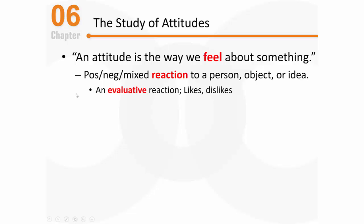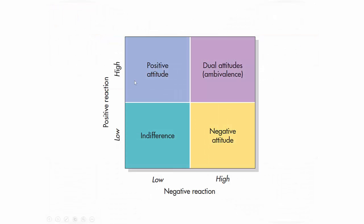Let's focus on the fact that attitudes can be comprised of positive reactions, negative reactions, or even a mix between positive and negative reactions — in other words, attitudes can get relatively complicated. You can have positive reactions and negative reactions about any given attitudinal object. The attitudinal object is the thing you're actually evaluating. For a positive attitude, you have a high positive reaction and a low negative reaction.